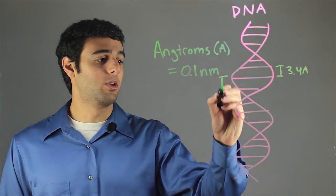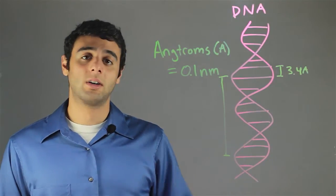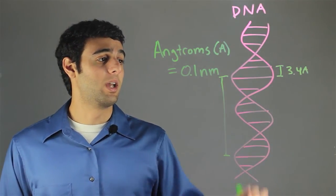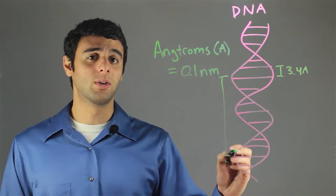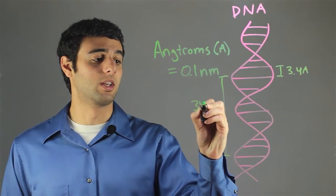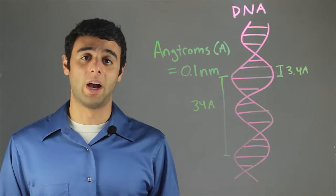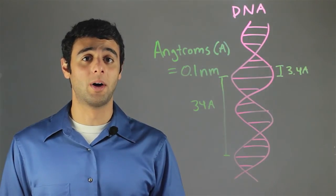In one full loop of the helix, we have about 10 base pairs. So doing the math, that's approximately 34 angstroms for each loop of the helix.